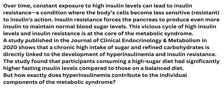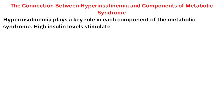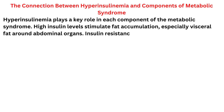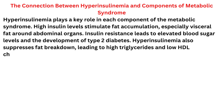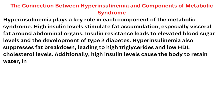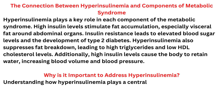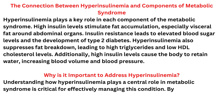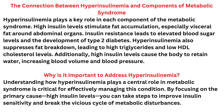But how exactly does hyperinsulinemia contribute to the individual components of metabolic syndrome? Hyperinsulinemia plays a key role in each component. High insulin levels stimulate fat accumulation, especially visceral fat around abdominal organs. Insulin resistance leads to elevated blood sugar levels and the development of type 2 diabetes. Hyperinsulinemia also suppresses fat breakdown, leading to high triglycerides and low HDL cholesterol levels. Additionally, high insulin levels cause the body to retain water, increasing blood volume and blood pressure.